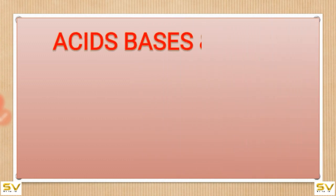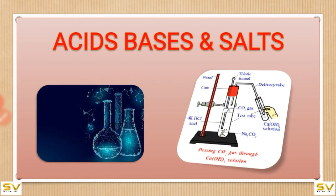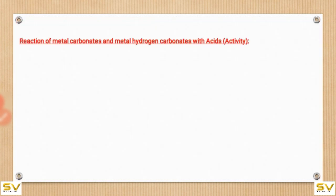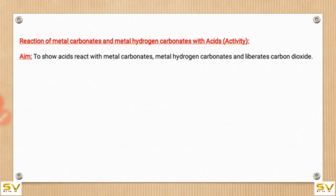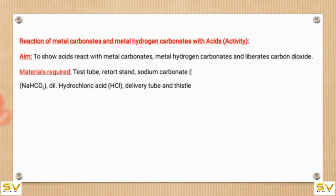Today I am going to discuss acids, bases, and salts — specifically the reaction of acids with metal carbonates and metal hydrogen carbonates, including the neutralization reaction. To show that acids react with metal carbonates and metal hydrogen carbonates and liberate carbon dioxide, the materials required are: test tube, retort stand, sodium carbonate, sodium hydrogen carbonate, dilute hydrochloric acid, delivery tube, and a thistle funnel.